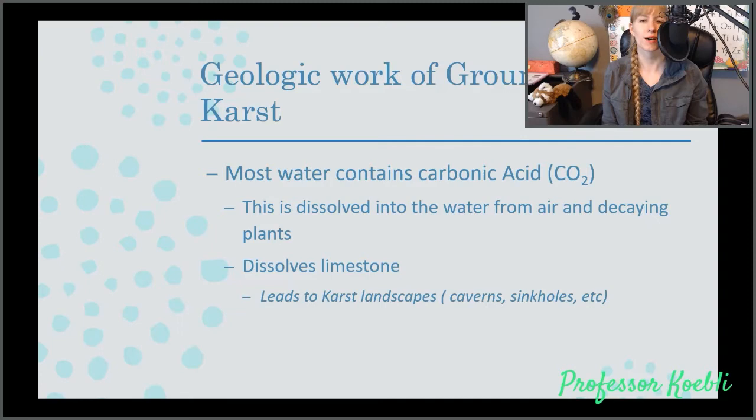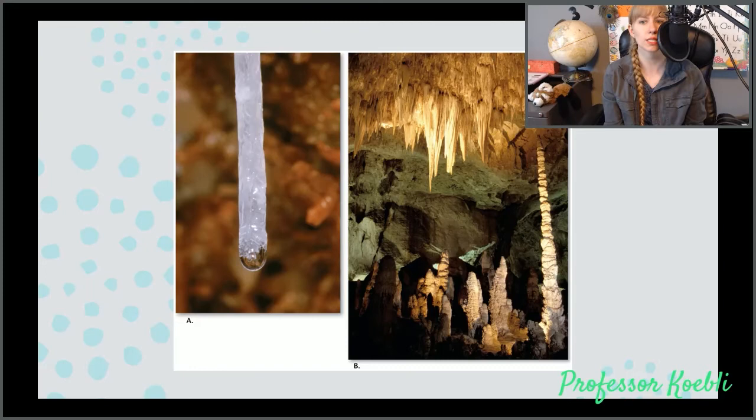Most groundwater contains carbonic acid, which is made with carbon dioxide and calcium. This is dissolved into the water from the air and decaying plants. It does dissolve limestone very nicely. It leads to karst landscapes such as cavern sinkholes and some other really pretty things. Here's an example of some of the caverns that are formed due to erosion, thanks to groundwater. These are created within the zone of saturation. The dissolved load is discharged into streams and caverns are decorated by calcium carbonate deposits such as stalactites and stalagmites.